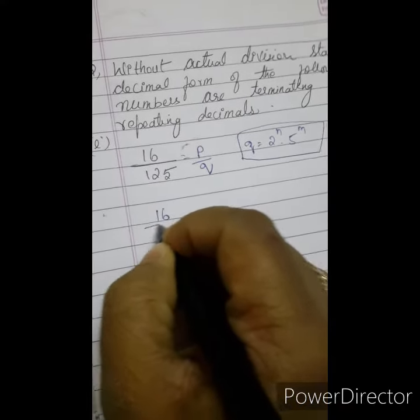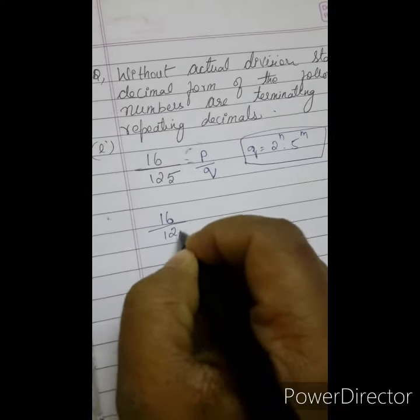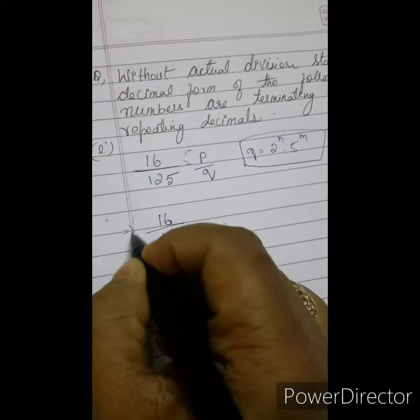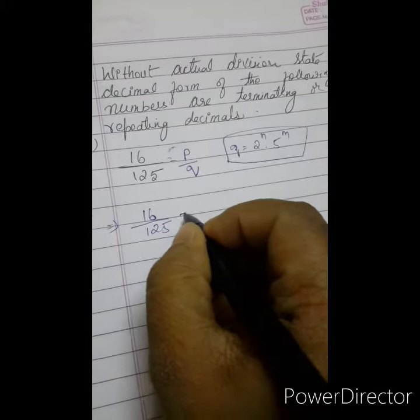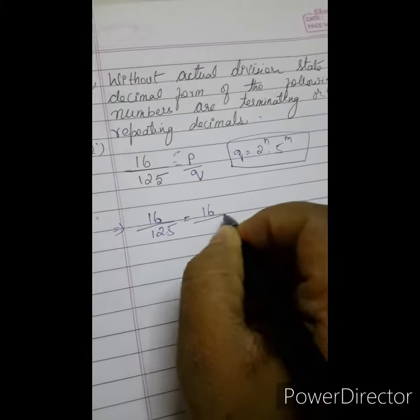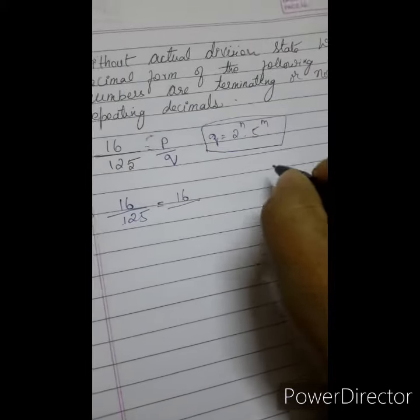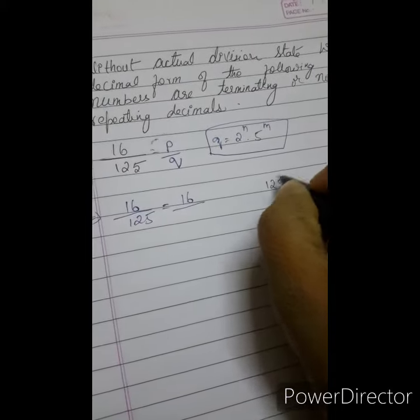Shall we start? We will write 16 as it is 16 and 125 again I am writing. 16 by 125, I am finding out the prime factorization.